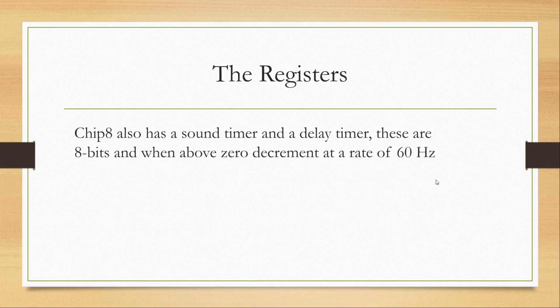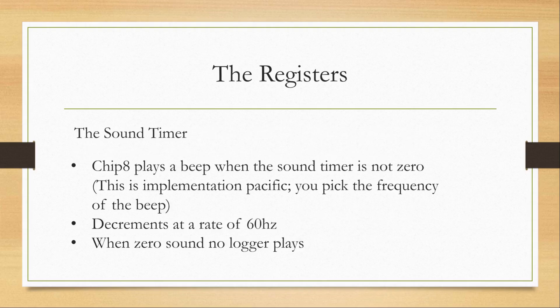The Chip 8 also has a sound timer and a delay timer. These are 8-bits wide and when above 0, they decrement at a rate of 60 Hz. Chip 8 plays a beep when the sound timer is not 0, and this is implementation-specific so you pick the frequency of the beep — it can be any type of tone, but not multiple tones. The sound timer decrements at a rate of 60 Hz and when it reaches 0, the sound no longer plays.